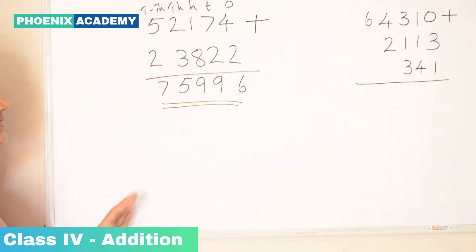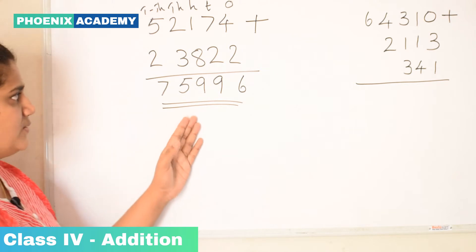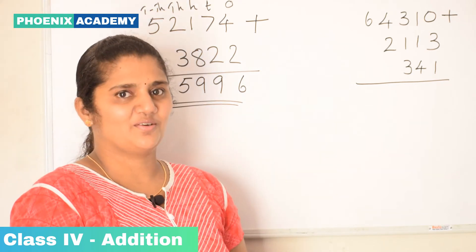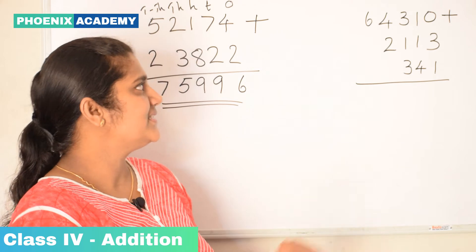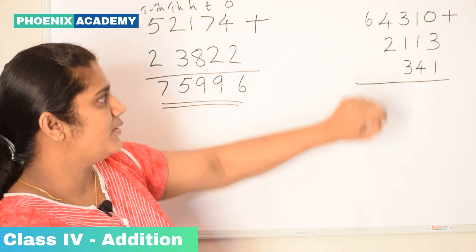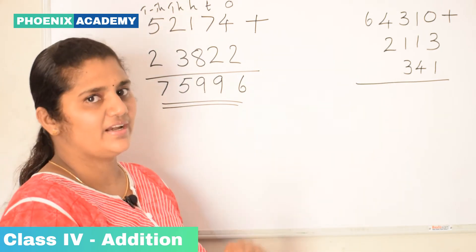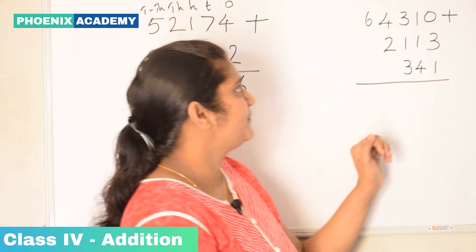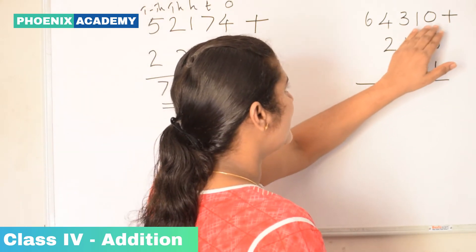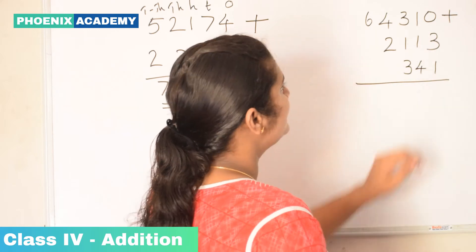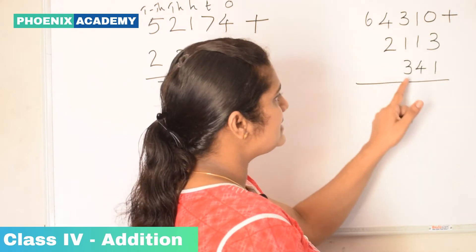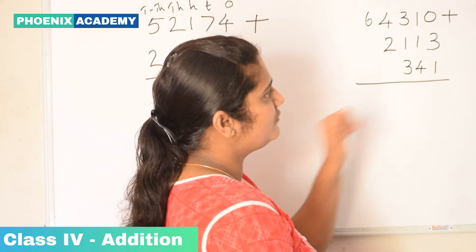So the sum is 75,996. Now we are going to add one 5-digit number, one 4-digit number, and one 3-digit number. Let's add 64,310 plus 2,113 plus 341.